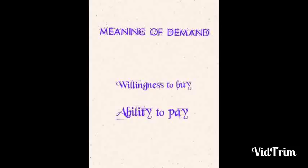If a rich person wants to buy a car, it is considered as demand, because he has the ability to pay for that car. So, what is demand? The desire backed by purchasing power is called demand.